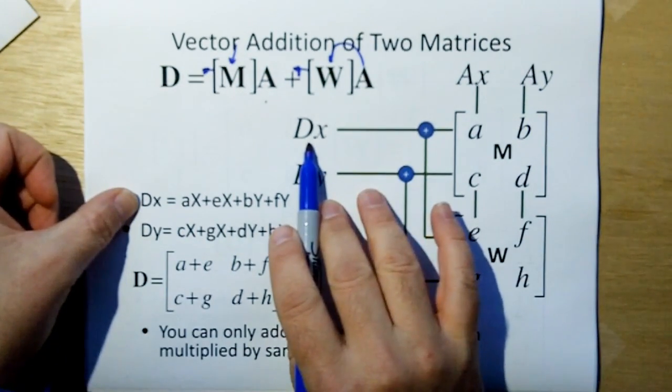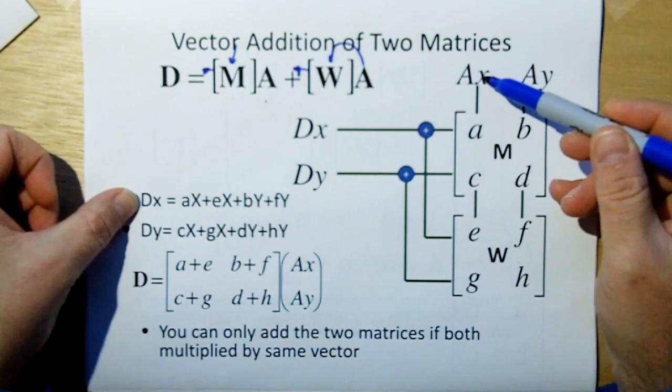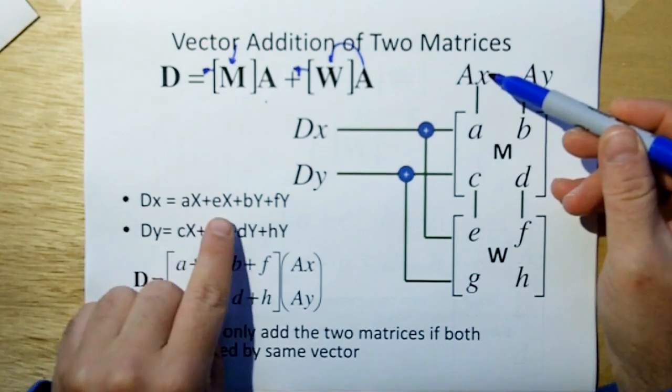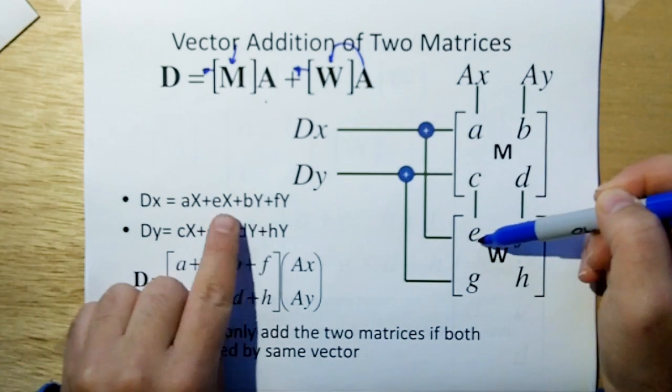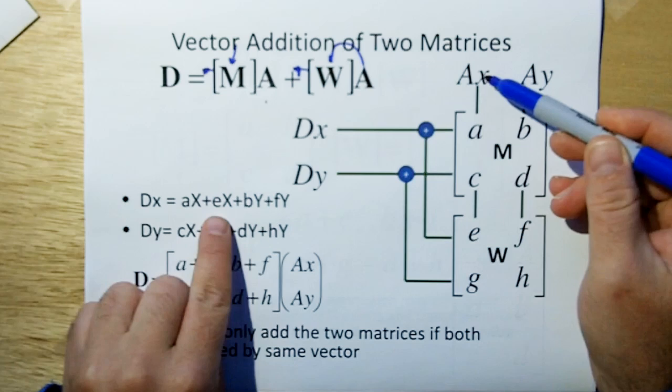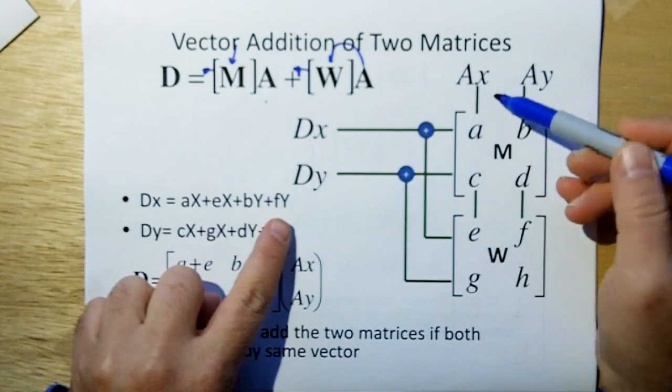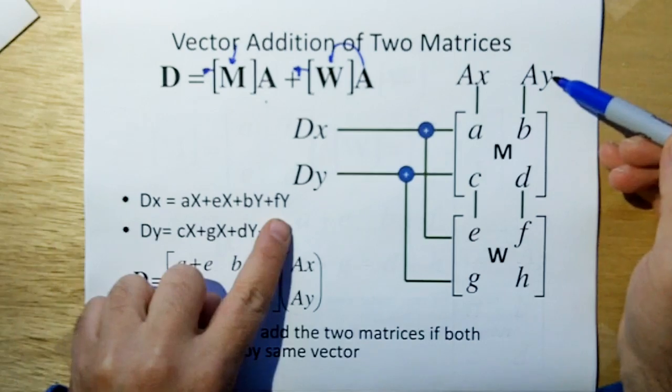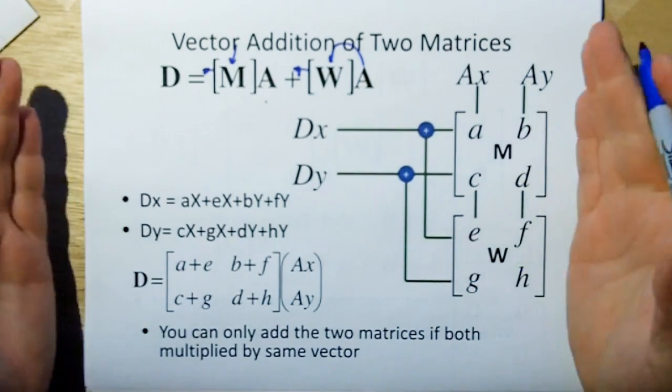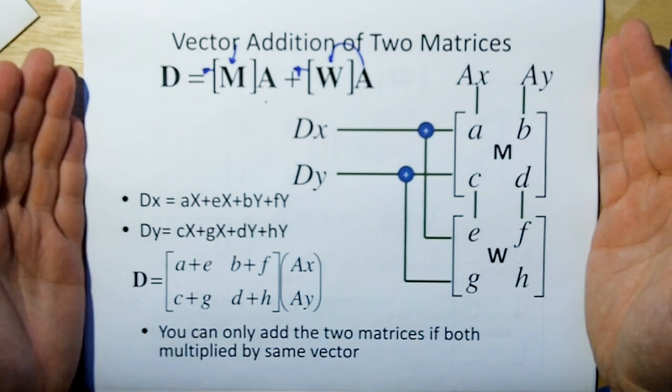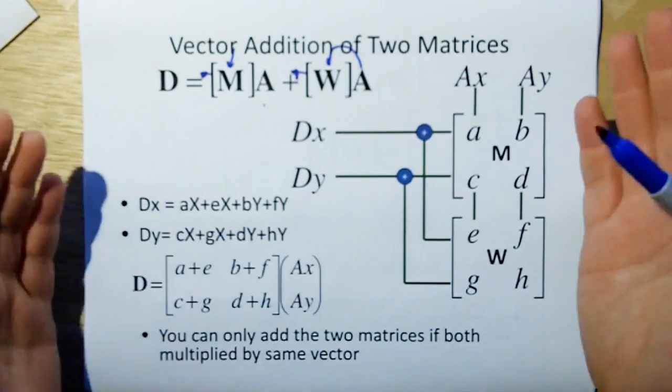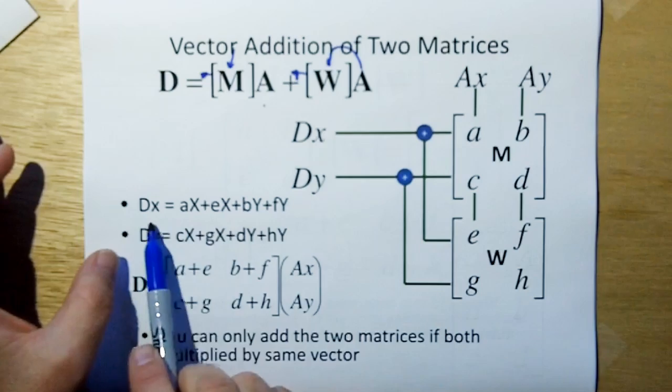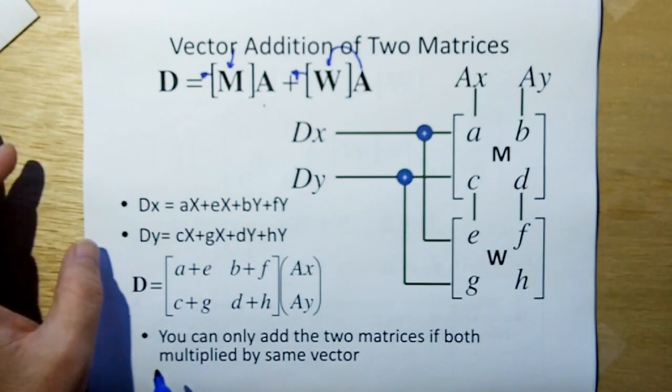We're actually summing the two vectors that result from these matrices multiplied by a vector. That's what we're summing. We're summing the results of the matrices. This is shown over here, and I'm showing the M and W with the A, the AX, the X component of A coming down one column, the Y component of A coming down another column. The result of the vector DX is the result of A times the X component of A plus B times the Y component of A.